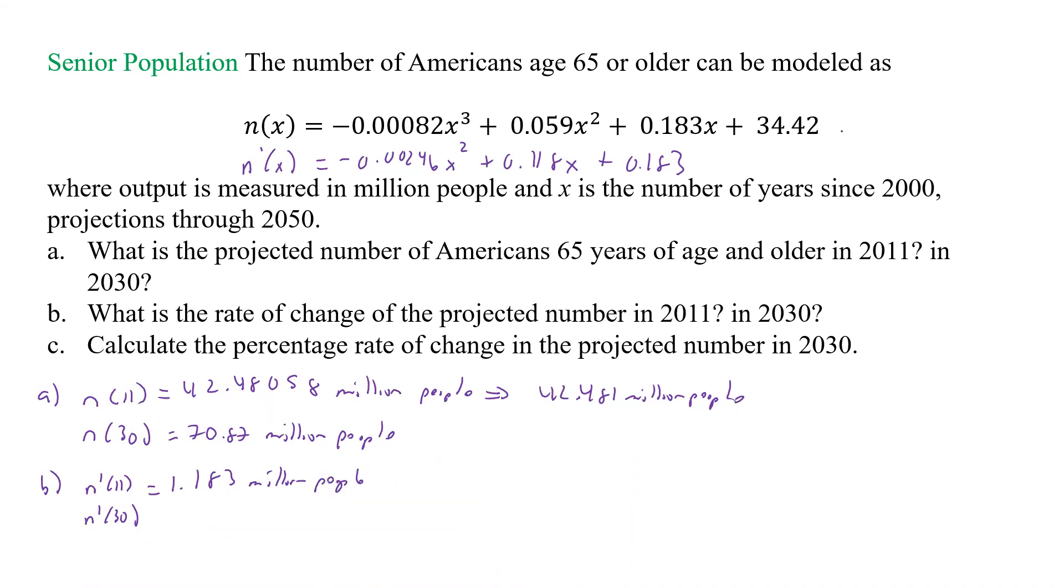And that's going to be million people. And now this should, so this is million people per year, a million people per year. And then 30, if I go back in and plug in, instead of 11, I plug in 30, I get the final number of 1.509 million people per year.